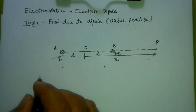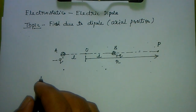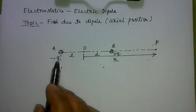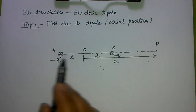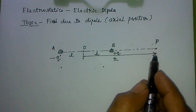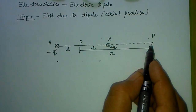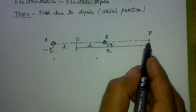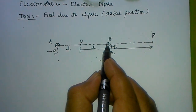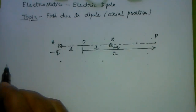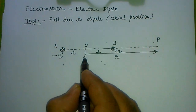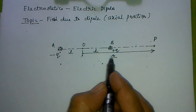Electrostatics: electric dipole. The topic is field due to a dipole at the axial position. We have a dipole with equal and opposite charges, plus Q and minus Q, separated by a very small distance 2L. We have to find the field at point P, which is at the axial position along the axis AB of the dipole. The distance from the center of the dipole to point P is R.